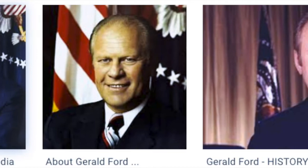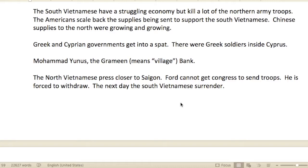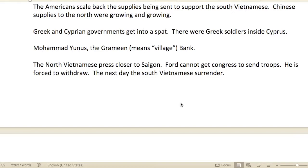The South Vietnamese had a struggling economy but killed a lot of Northern Army troops. The Americans scaled back the supplies being sent to the South Vietnamese, while Chinese supplies to the North were growing and growing.